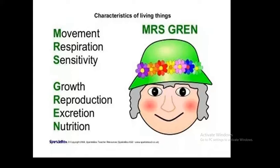The second characteristic is respiration. All living things respire. Respiration describes the chemical reactions in the cell that break down nutrient molecules and release energy for metabolism. Most living things need oxygen for respiration, so they take in oxygen and give out carbon dioxide.